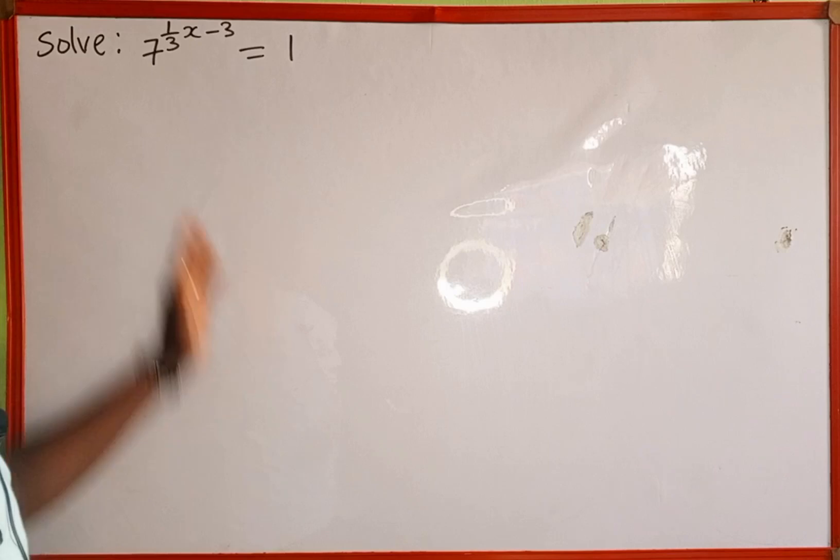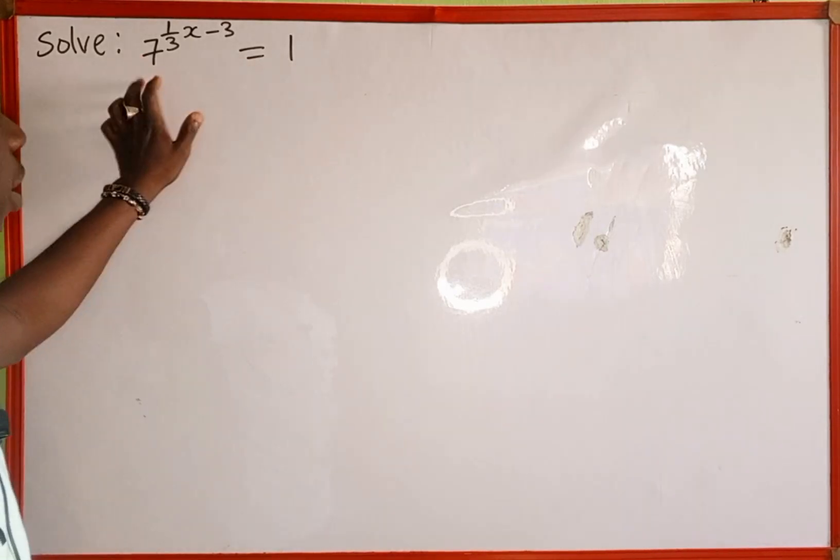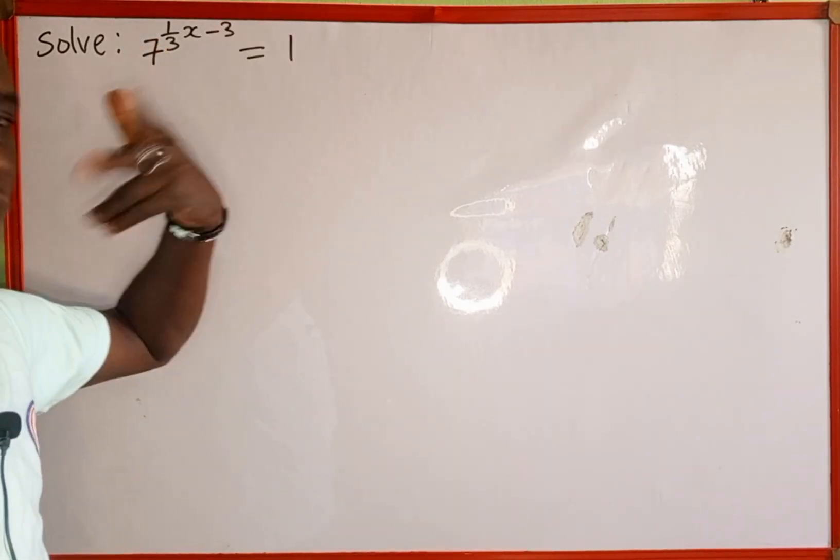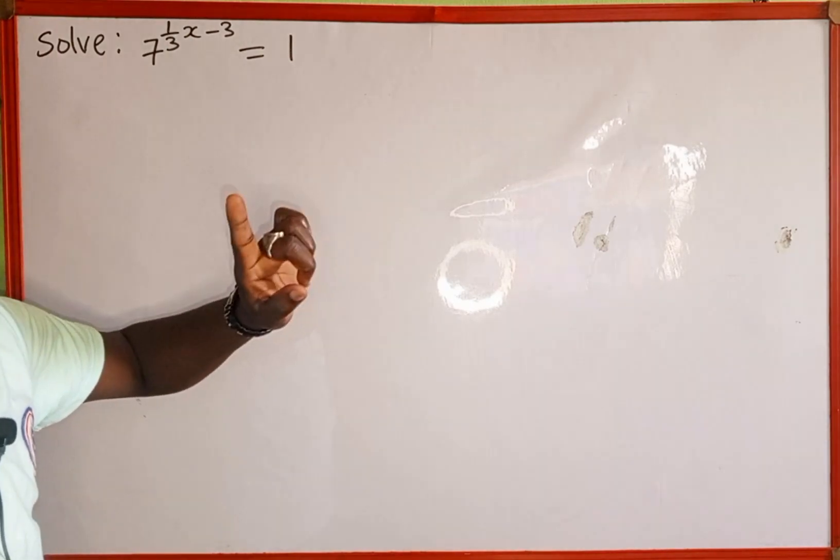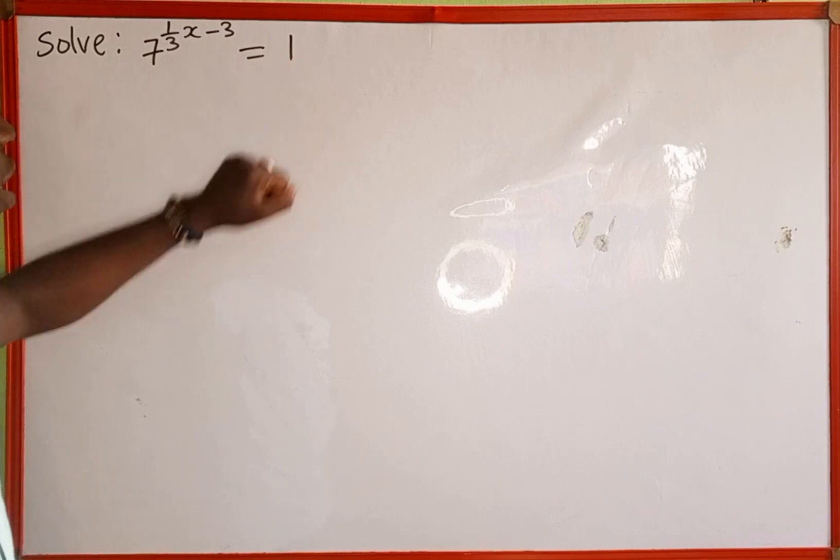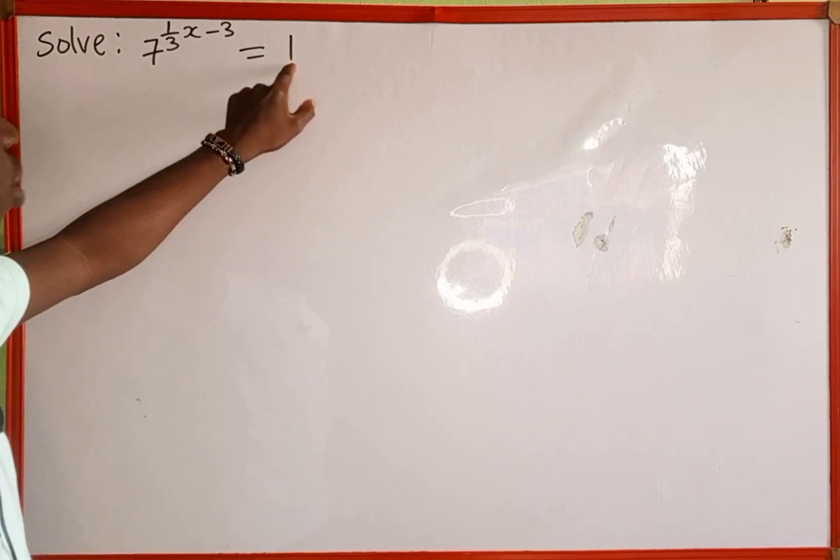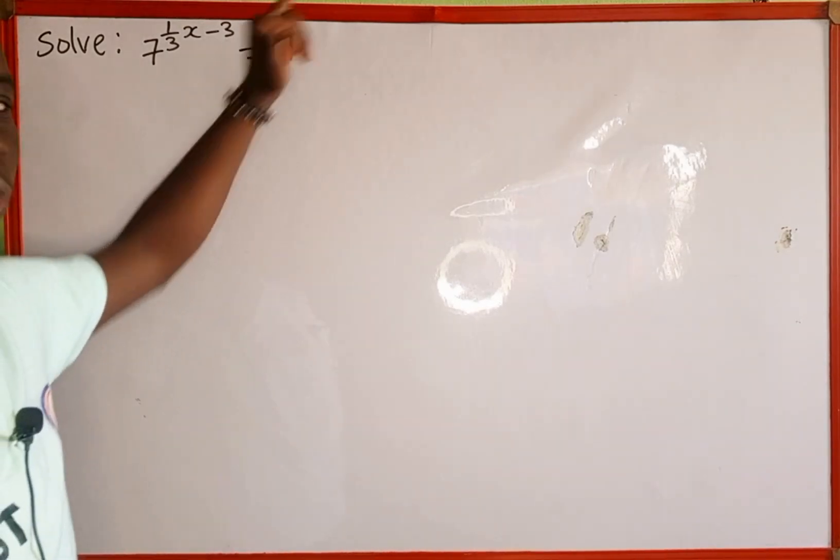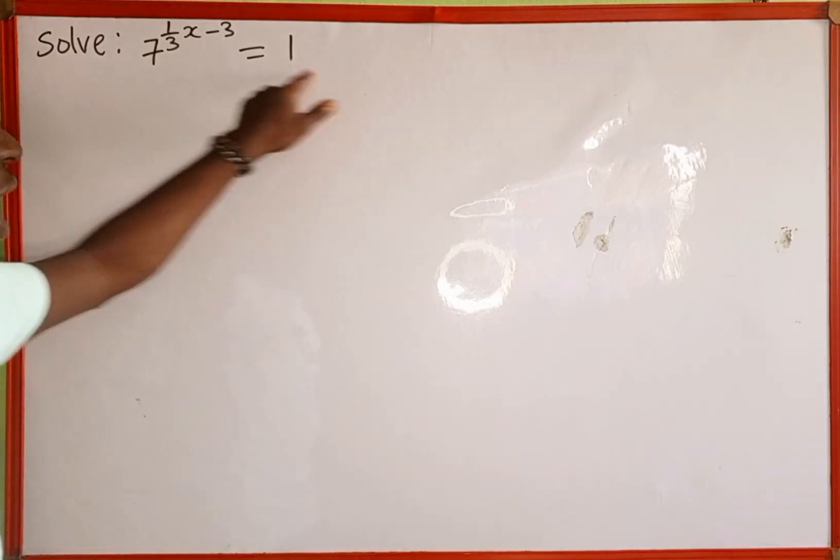The first thing we're going to do is to try to make these bases the same. Do you know that any number raised to the power of 0 is equal to 1? Therefore this 1 here can also be written as 7 raised to the power of 0 so that we can have the same basis.